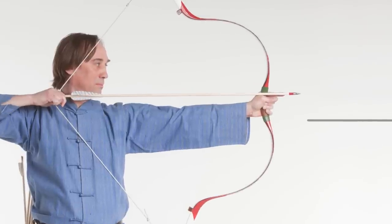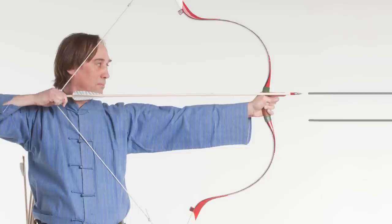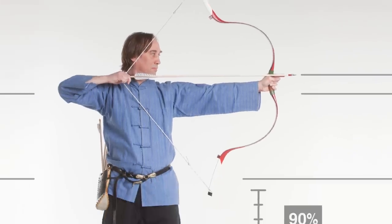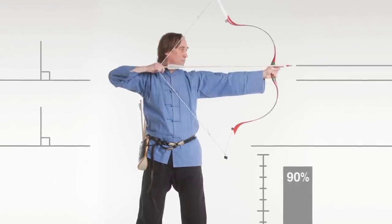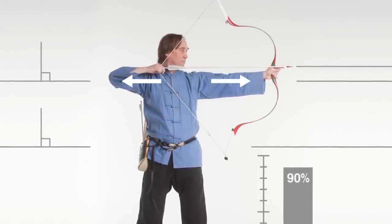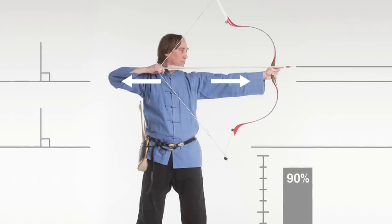The bow arm extends toward the target as if one is reaching out to touch the bullseye with the bow hand index finger. The string hand elbow extends in the opposite direction toward the rear. This creates a dynamic tension between the two arms and stabilizes them, preventing the front arm from moving during the release.